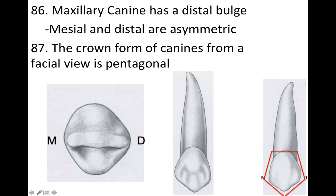The maxillary canine is going to have a distal bulge. Looking at it from the incisal, you can see this distal asymmetry — the mesial and distal are asymmetric because of the distal bulge. The crown form of canines from a facial view is going to be a pentagon.